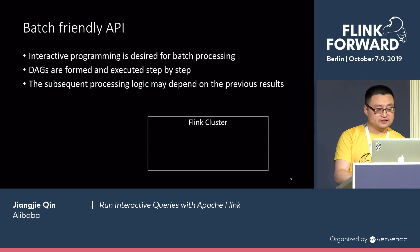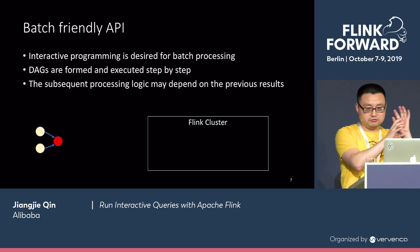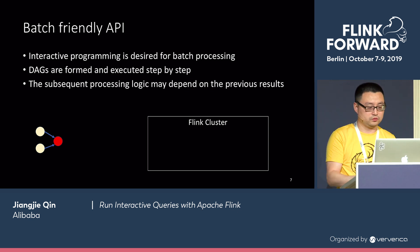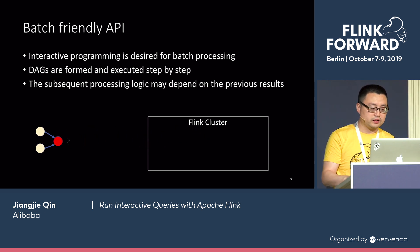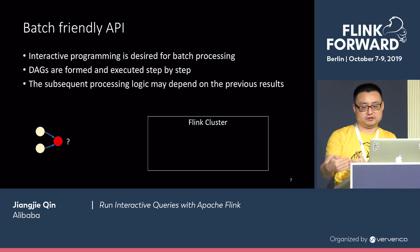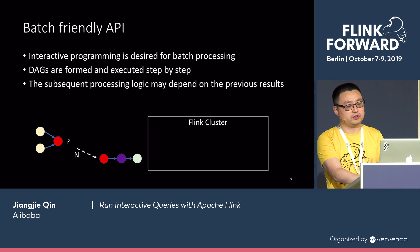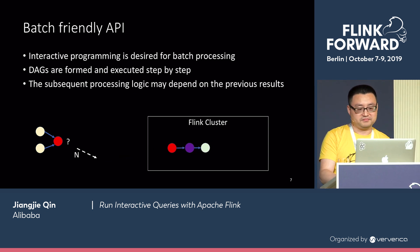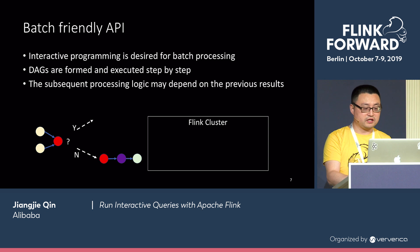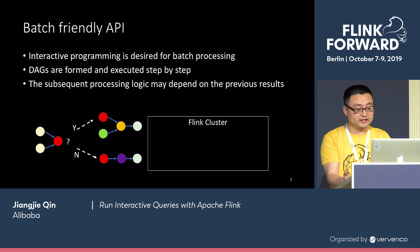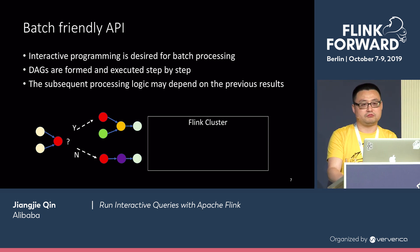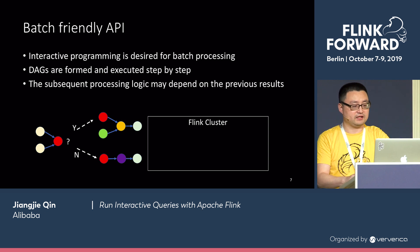What happens is like this: I might have one simple programming logic — a few lines of code — and I might submit it to the Flink cluster and get a result back. Then I want to take a look at this result. Depending on the result, if it meets some requirement, I'm going to do one thing. If it doesn't meet this requirement, it goes to another path — I'm submitting yet another DAG. So it's different computation logic depending on the result I get from my first step. As you can see, it's quite different from what Flink's current API supports.